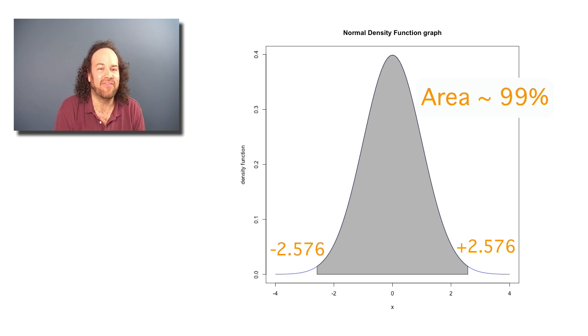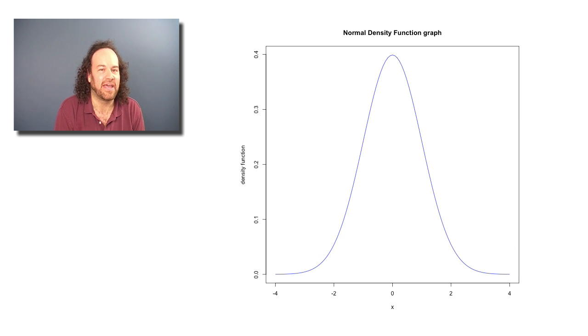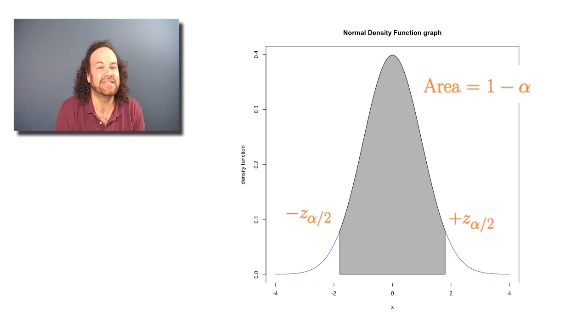Indeed, for any value of alpha, if you want to make sure that the probability that you're wrong is only alpha, you can find a value sometimes called z sub alpha over 2, such that the area under the normal curve which is less than minus z sub alpha over 2 is equal to alpha over 2. And then if you take the interval from minus z sub alpha over 2 to plus z sub alpha over 2, then that will contain 1 minus alpha of the area.